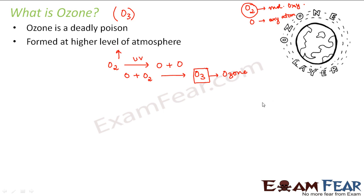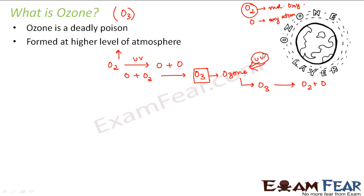This ozone then absorbs the ultraviolet radiation. After absorbing UV radiation, the ozone breaks down to form molecular oxygen plus atomic oxygen — that means the reverse process is happening. But meanwhile it is absorbing the ultraviolet radiation, which is harmful for us. So the ozone layer is basically absorbing the ultraviolet radiation in the process of its own decomposition, forming molecular oxygen plus atomic oxygen.